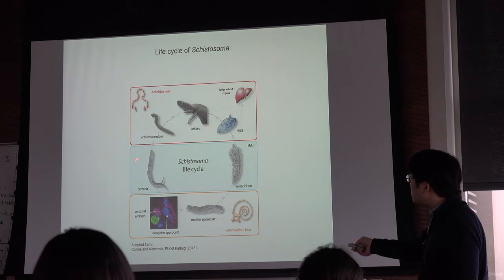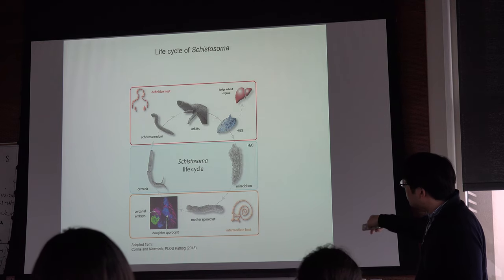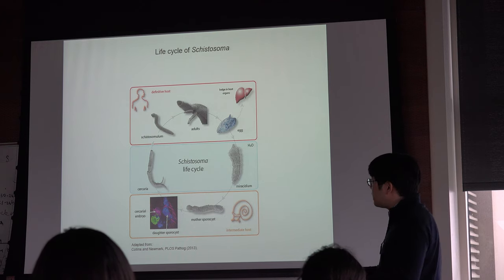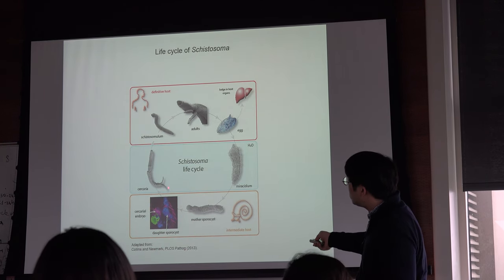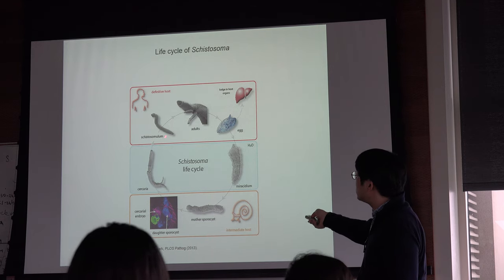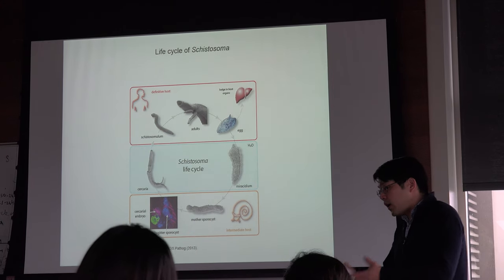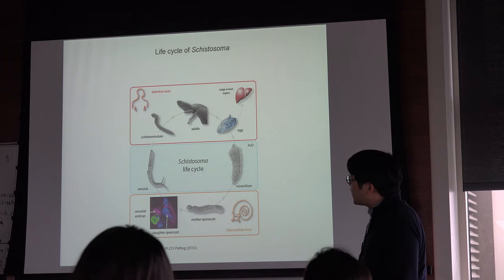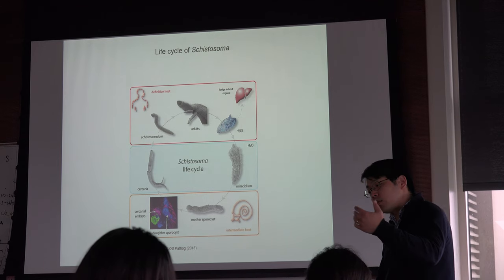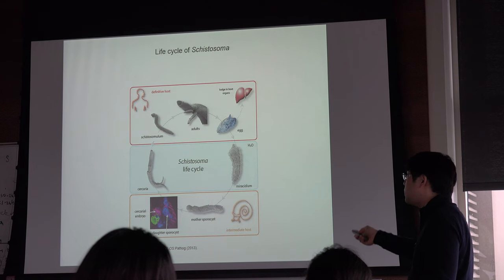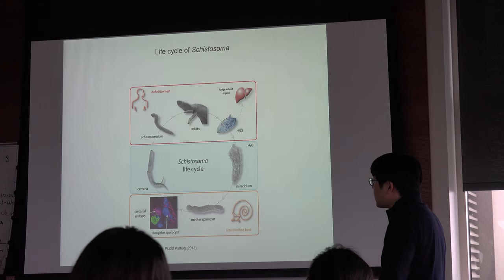From these sporocysts arise infectious larvae called cercariae, which have a tail they use to swim out of the snail into the water. They look for the definitive mammalian host and penetrate through the skin, losing the tail. The body transforms into the larval form called schistosomula, which finds its way into blood vessels — first going to the lung, then to the hepatic portal vein — where it feeds on blood, develops all necessary organs including the digestive and reproductive systems, matures, and finds its male-female pair inside the blood vessel.